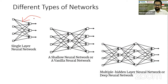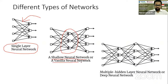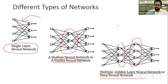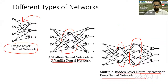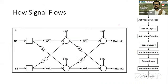When there is no hidden layer, we call it a single layer neural network. When there is only one hidden layer, we call it a shallow neural network or a vanilla neural network. When there is more than one hidden layer, we call it a multi-hidden layer neural network or a deep neural network. So now we know what a node is, what a layer is, how the orientation and number of layers form different types of neural networks, what weighted sum is, how the node calculates it, and how the final output is processed through the activation function.